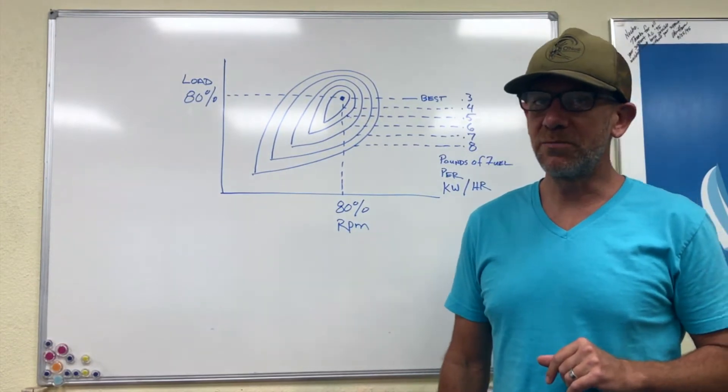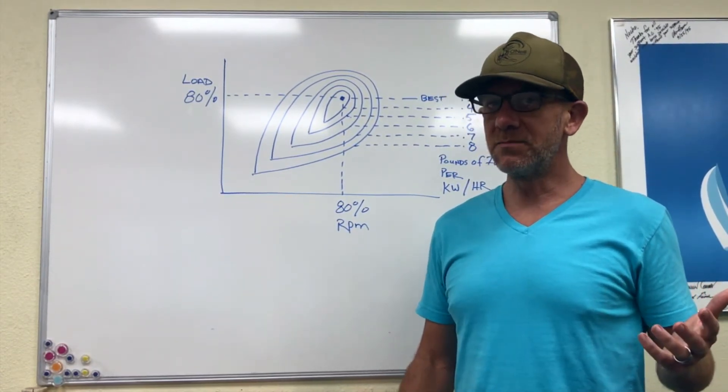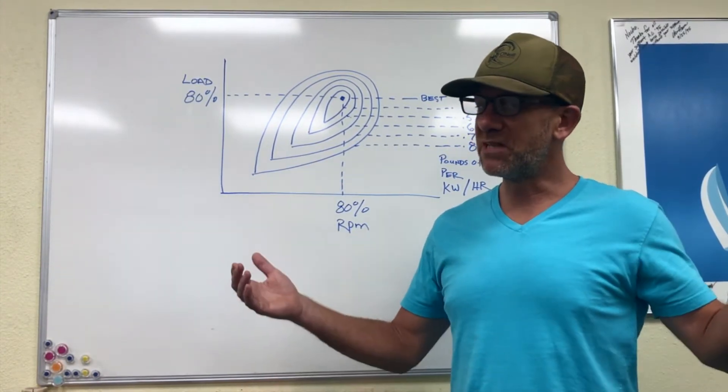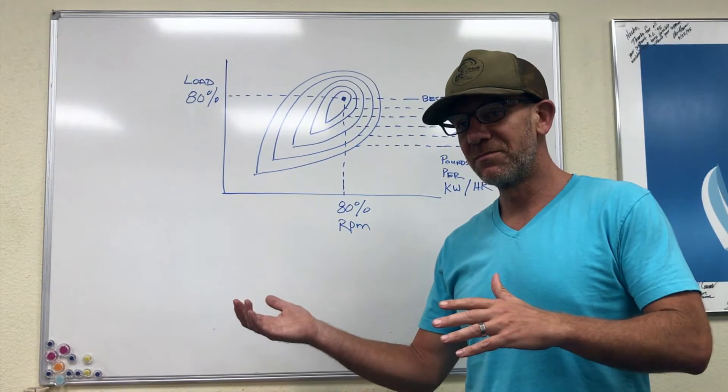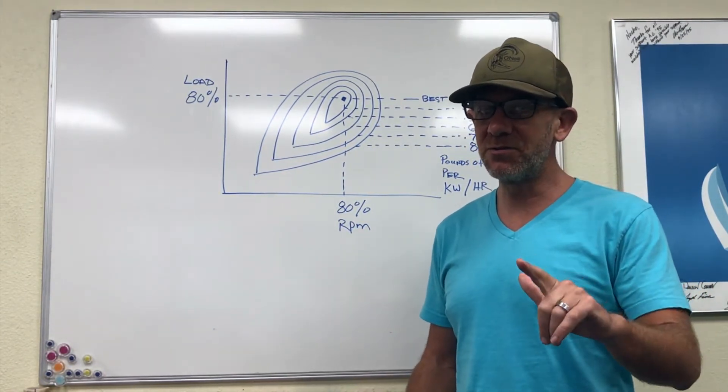Today we're going to talk about what it takes to generate one kilowatt of power from a diesel generator. The quick answer: 80 cents to five dollars. If that's all you came for, feel free to click away now. If you want to know why that range, stay tuned.